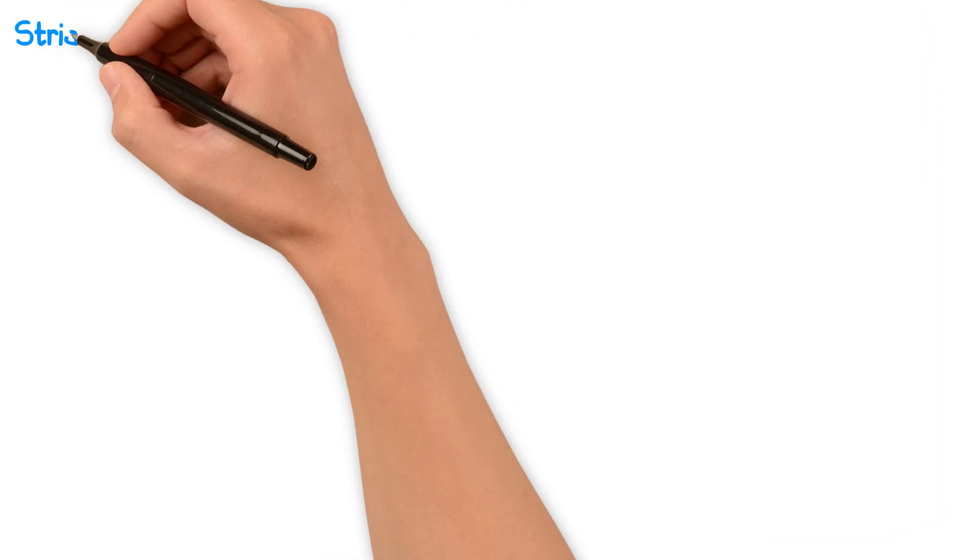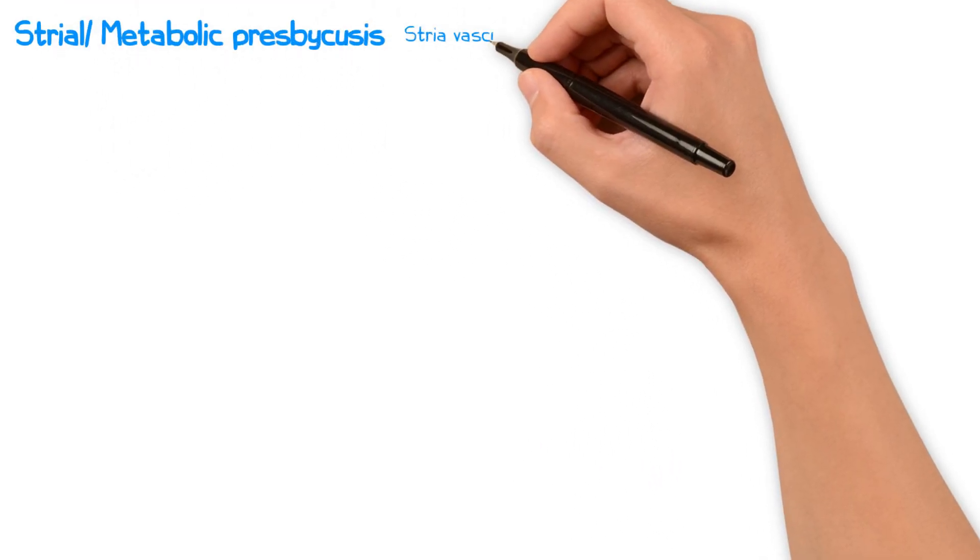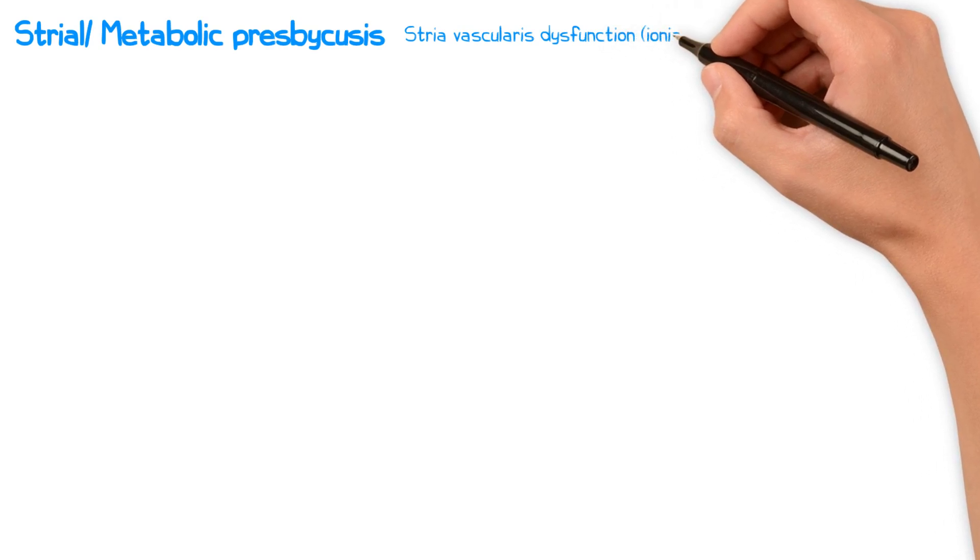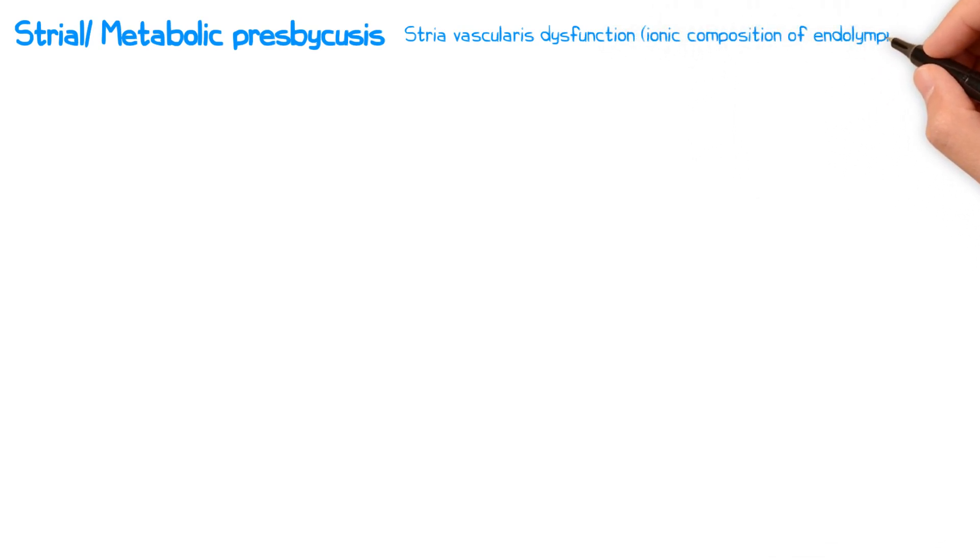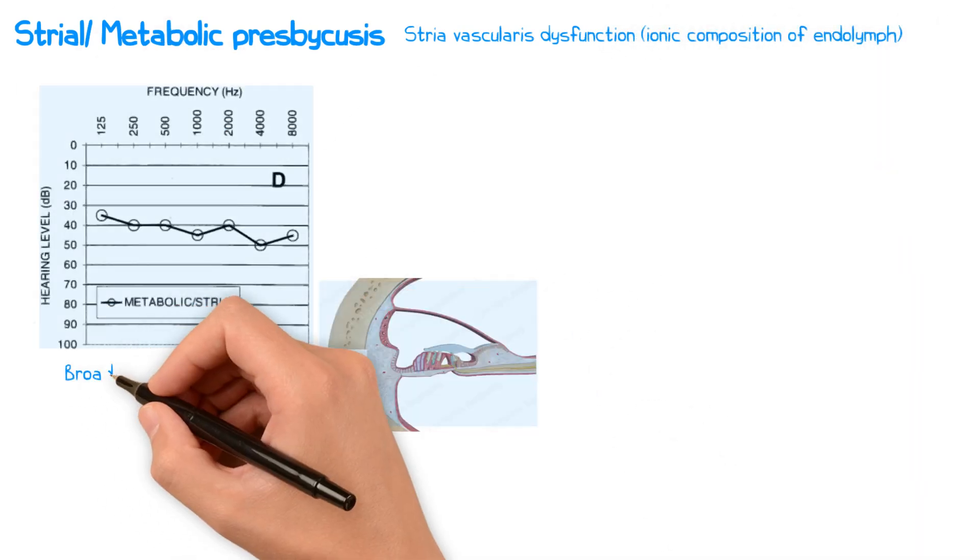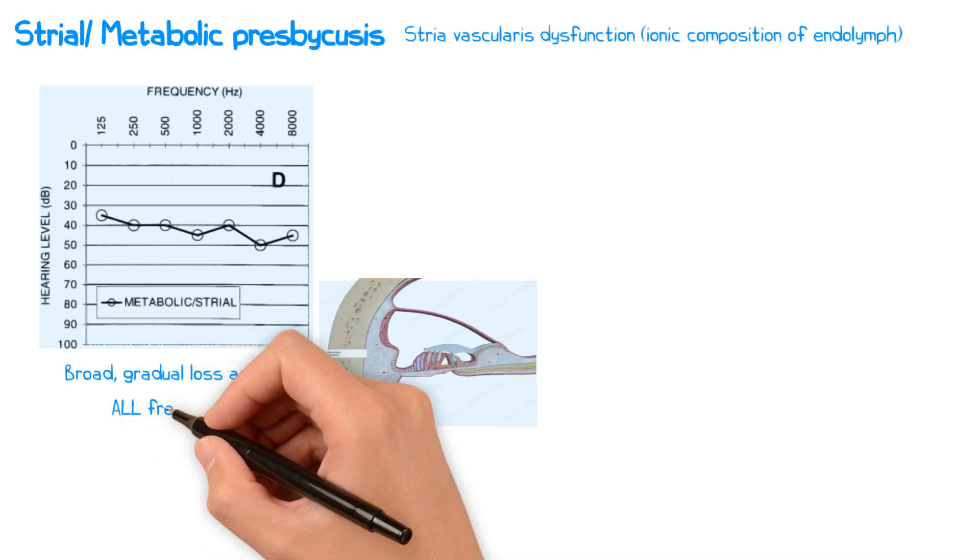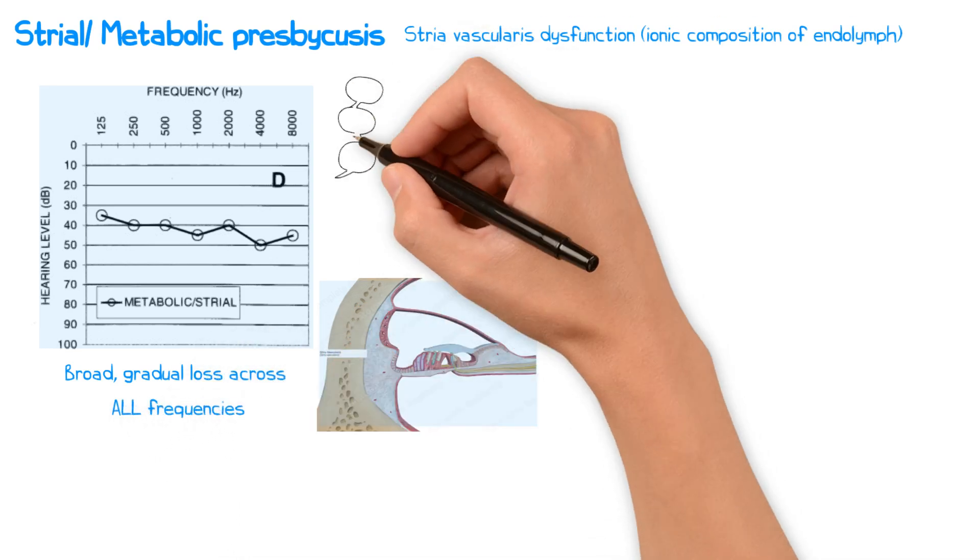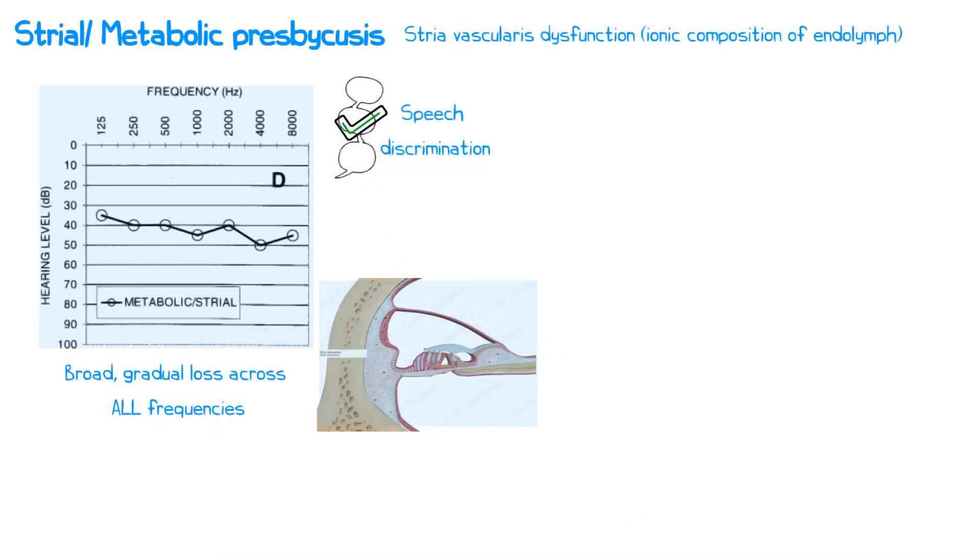With strial or metabolic presbyacusis, the stria vascularis which is usually responsible for maintaining the ionic composition of the endolymph becomes dysfunctional, leading to a broad gradual loss across all frequencies. These patients typically retain good speech discrimination but have a significant degree of hearing loss across all frequencies.